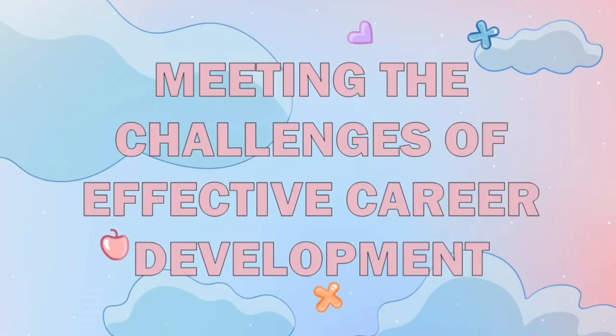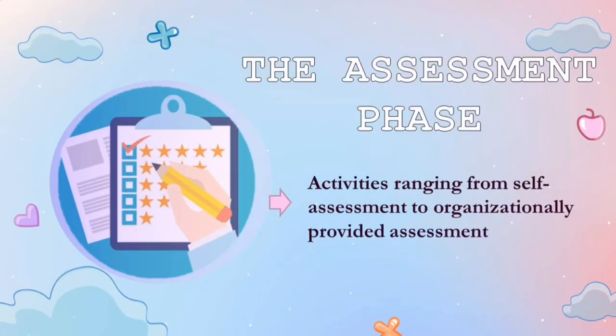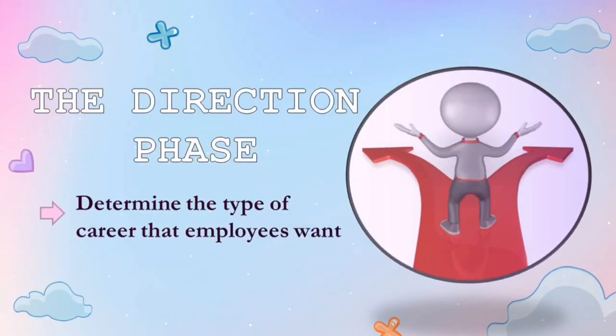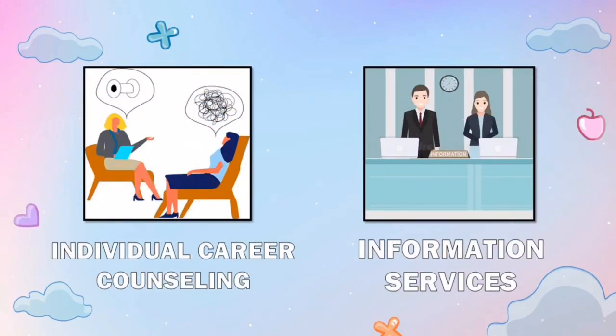Meeting the challenges of effective career development. The first is the assessment phase. This phase includes activities from the employee's own self-assessment all the way to the assessment provided by the organization. The expected goal and result is to identify the employee's strengths and weaknesses. Next is the direction phase — here, it is determined what kind of career the employee wants and what steps they will take to achieve their career goals. This includes individual career counseling and information services.